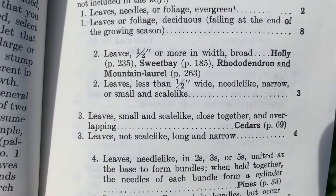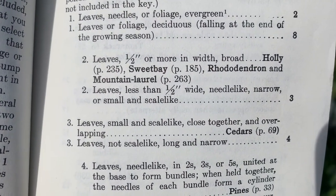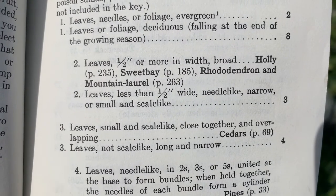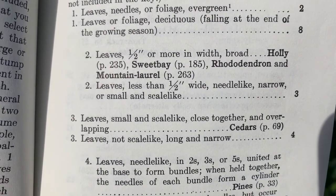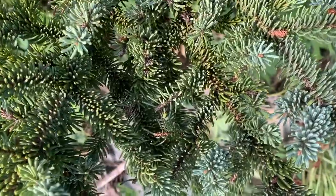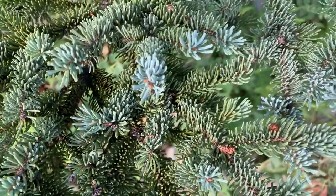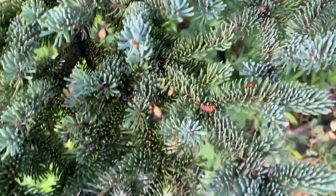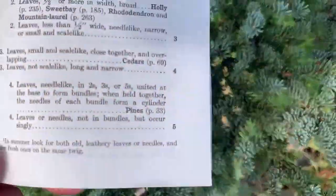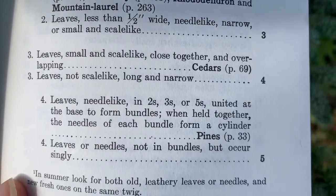Are the leaves small and scale-like, close together, and overlapping? Or are they not scale-like — long and narrow? Let's get closer so I can take a look. These needles are definitely not scale-like; they are long and narrow. So that means we're going to take the second option for number three and go to number four. Are the needles in twos, threes, or fives united at the base to form bundles like a pine, or not in bundles, occurring singly? These are definitely not in bundles and they're occurring singly, so I'm going to go on to number five.